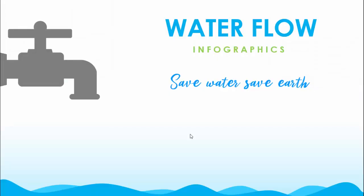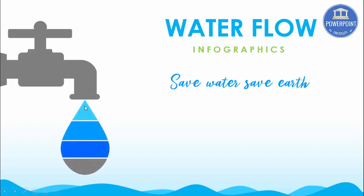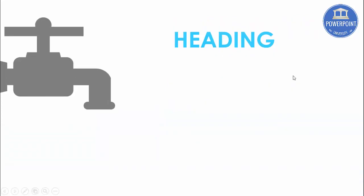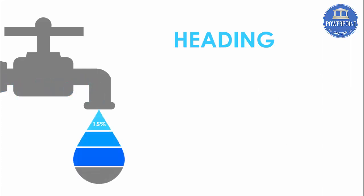In this tutorial I'm going to show you a very important slide where you can use it for water conservation, water flow, or water scarcity around the world or for other purposes. I have created a slide with a tab, and when I click, the water flows from the tab and the drops appear showing five percent, twenty-five percent, sixty percent, or eighty-five percent. There's also a version without any background effect that works the same way.